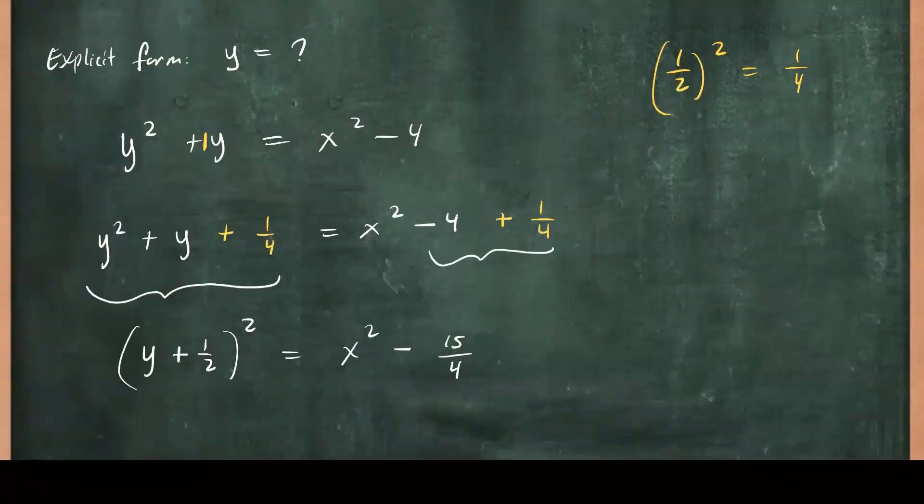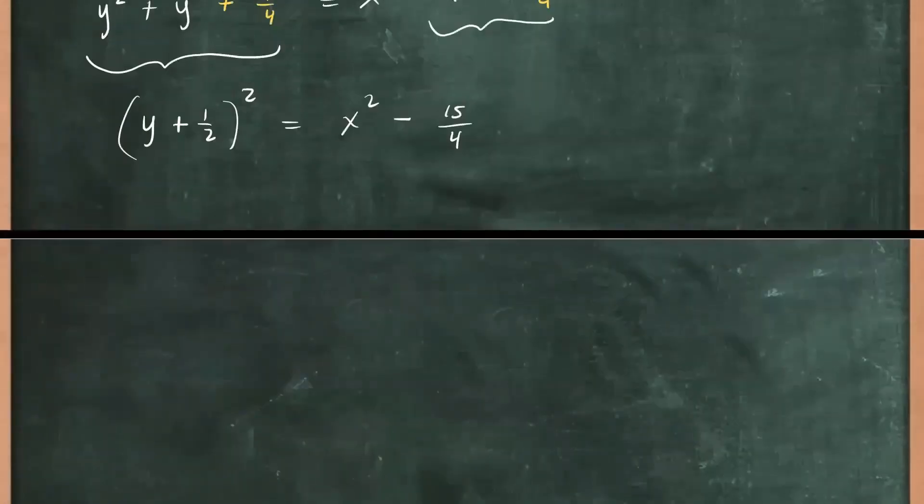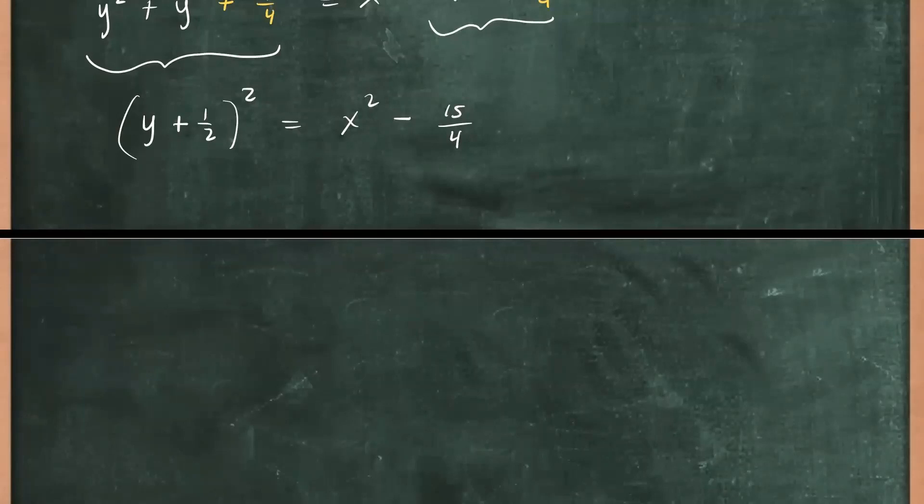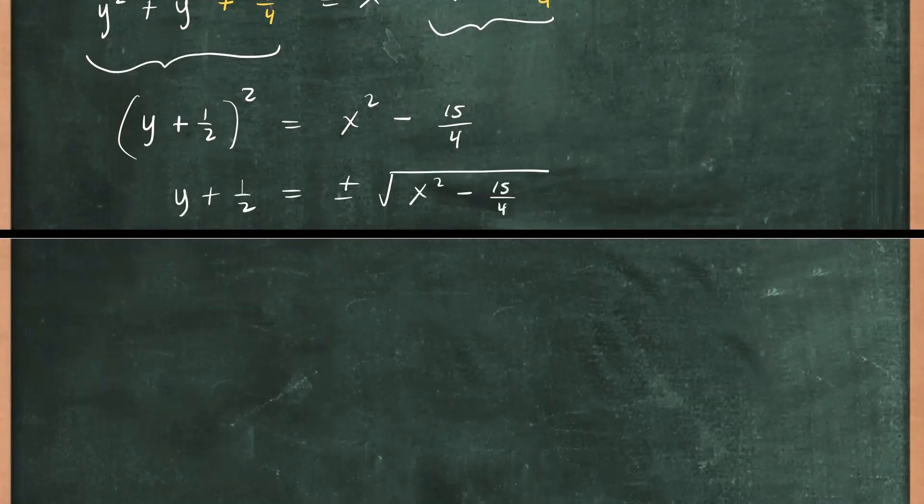And now we can go ahead and solve for y by taking the square root on both sides. So if you do that, you will get y + 1/2 is equal to plus and minus the square root of x² - 15/4. And finally, we subtract 1/2 from both sides. We get y = -1/2 ± √(x² - 15/4).